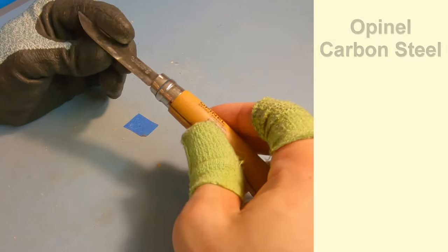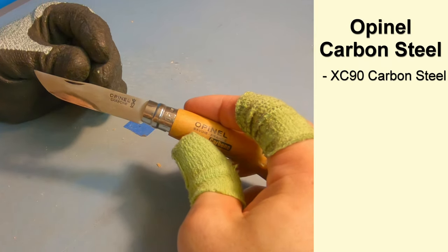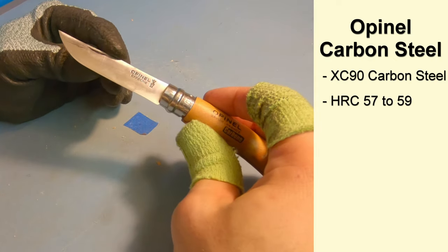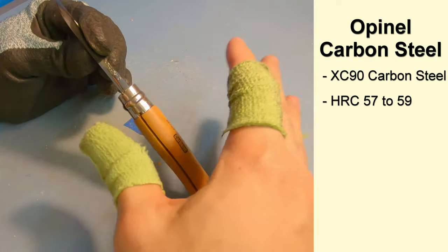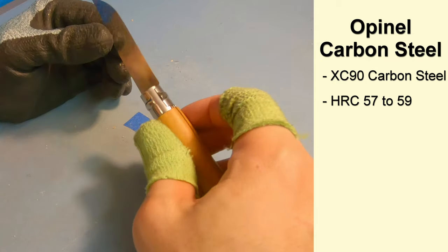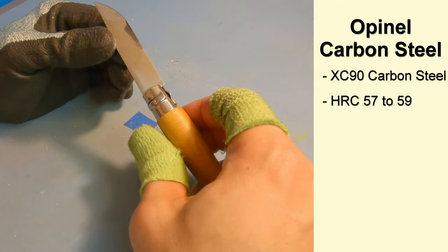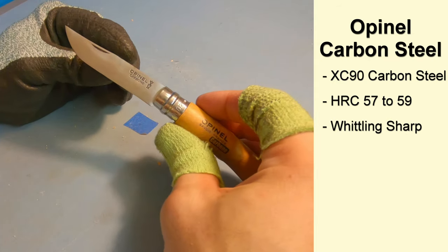Opinel uses a steel called XC90 carbon steel. It has a Rockwell hardness of 57 to 59 which is at the lower end of where you'd want your whittling knives to be, but it is whittling sharp right out of the box.